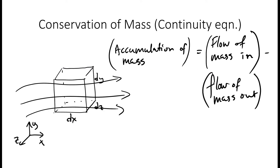So let's begin by looking at a small volume element fixed in space with sides dx, dy, dz. We have flow going through this volume element, in this case from left to right. The physical principle states that the accumulation of mass in this volume element equals the flow of mass into the element minus the flow of mass out of the element.